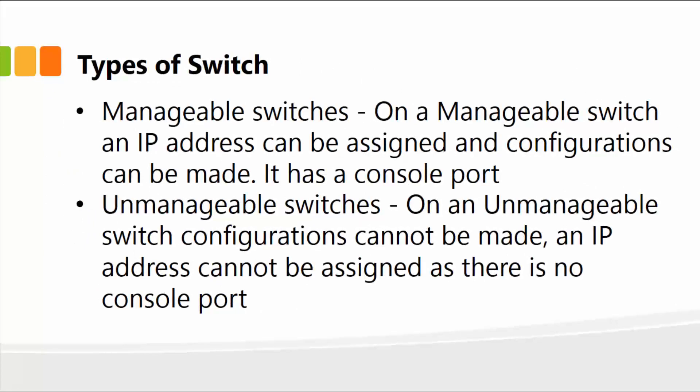There are types of switches as well: manageable switches and unmanageable switches. A manageable switch takes an IP address that can be assigned, and various configurations can be made on that switch. The switch will have its own interface, so a user can log in, configure the switch, enter IP addresses, and assign addresses based on your own network topology. It also has a console port. Unmanageable switches are simply the opposite — IP addresses cannot be assigned and there is no console port; however, they will still transfer data from one node to the other intelligently.